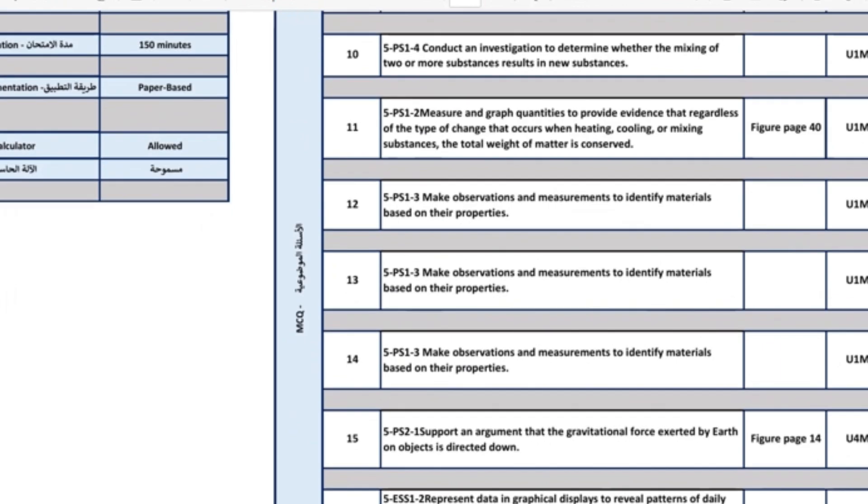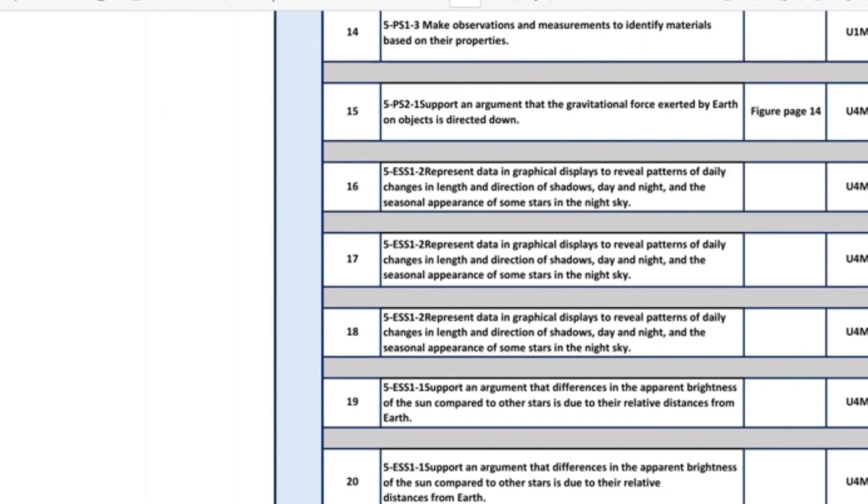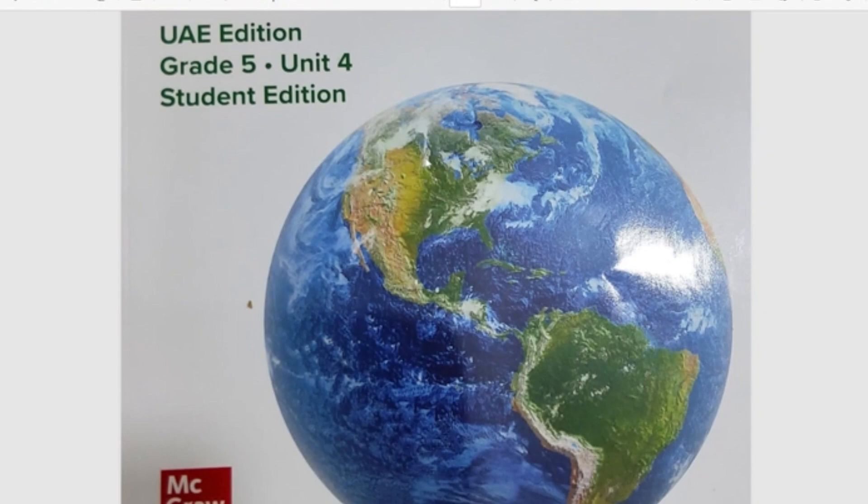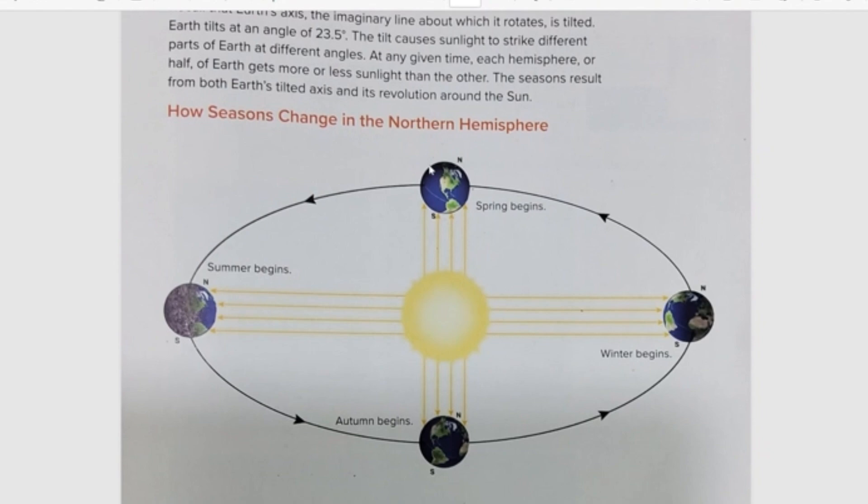So that is in Book 1. Let's have a look at the next part in the Heikal. So we will go to the next part. Here it says, represent data in graphical display, is number 17. It says to reveal the pattern of daily changes and direction of shadows, day and night, seasonal appearance. This is in Book 2, seasonal appearance of some stars in the night sky is in Book 2.